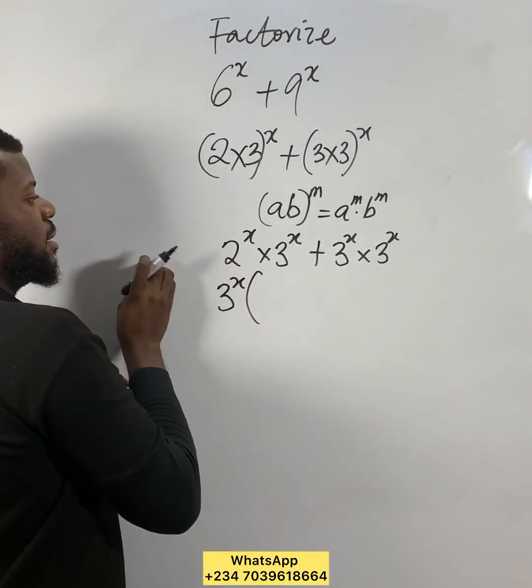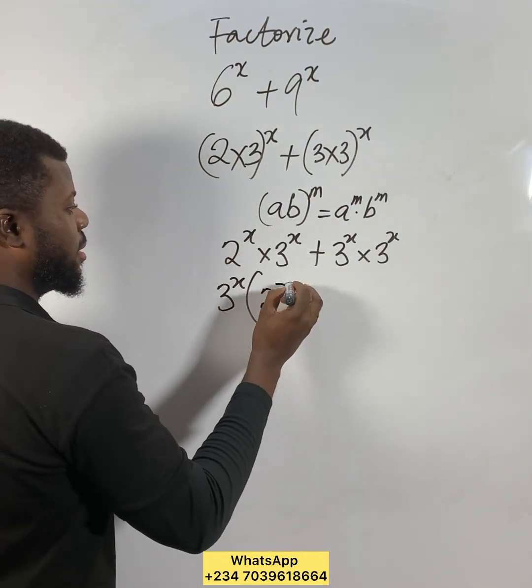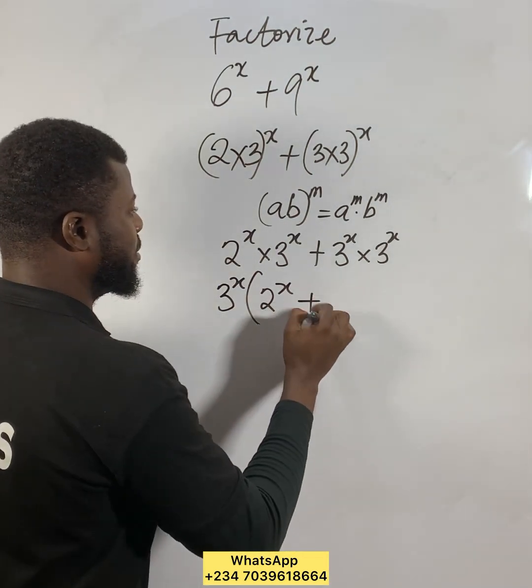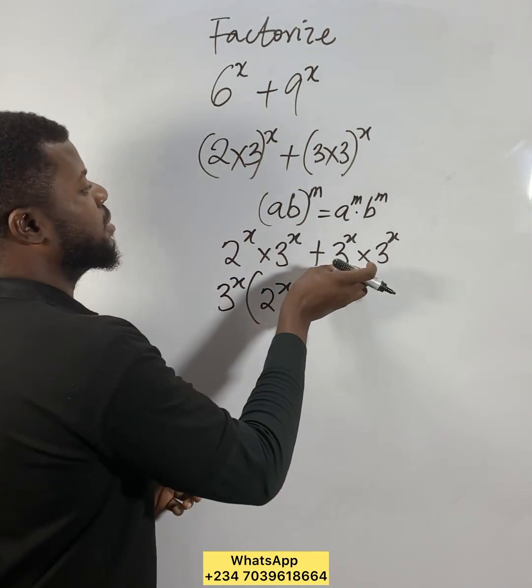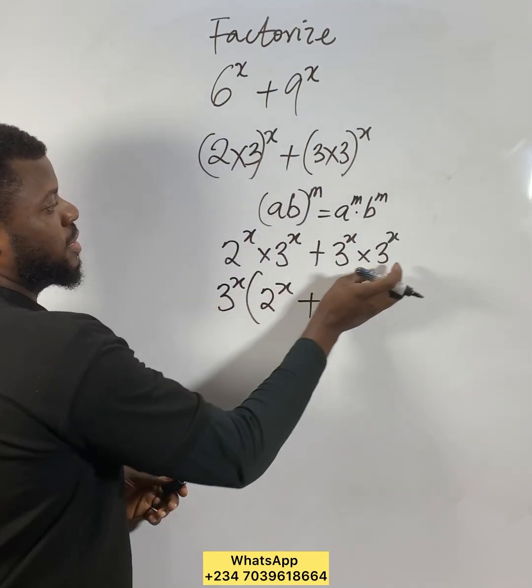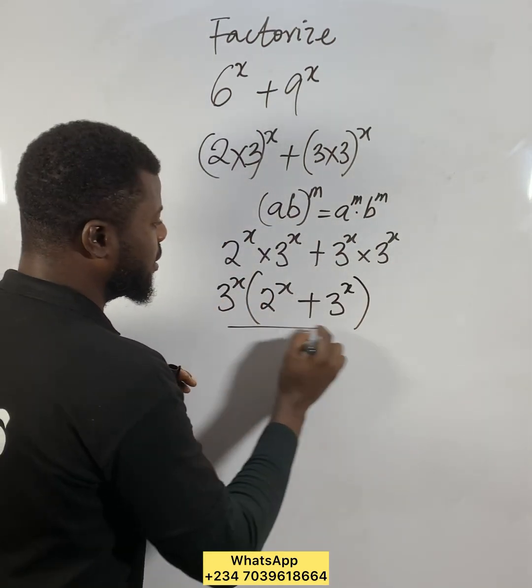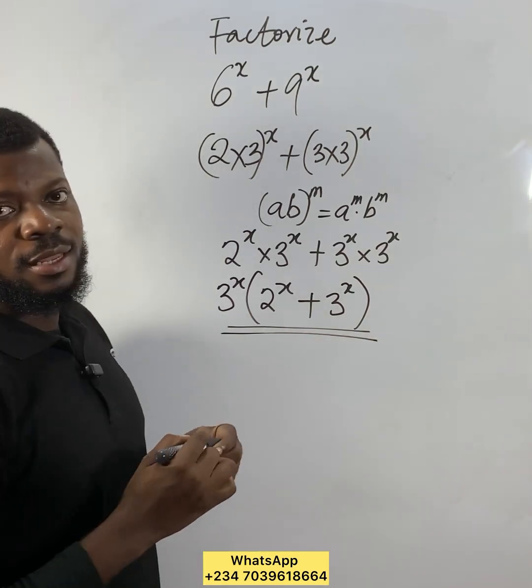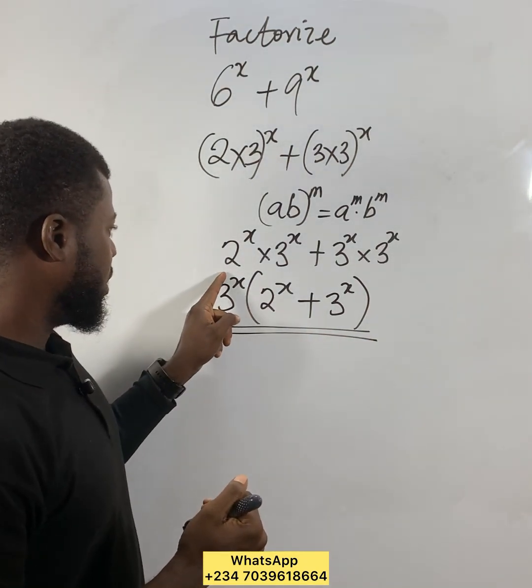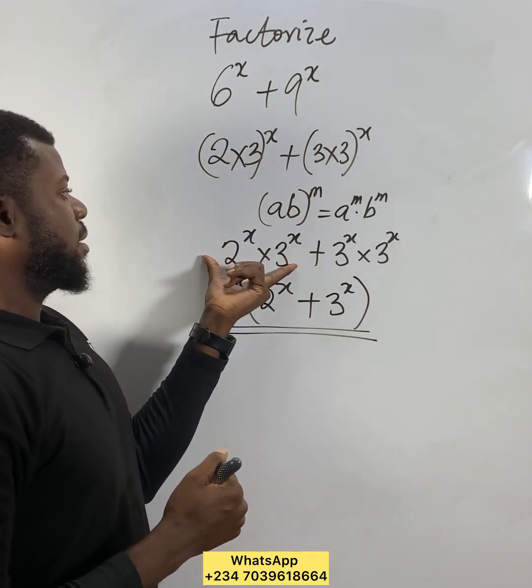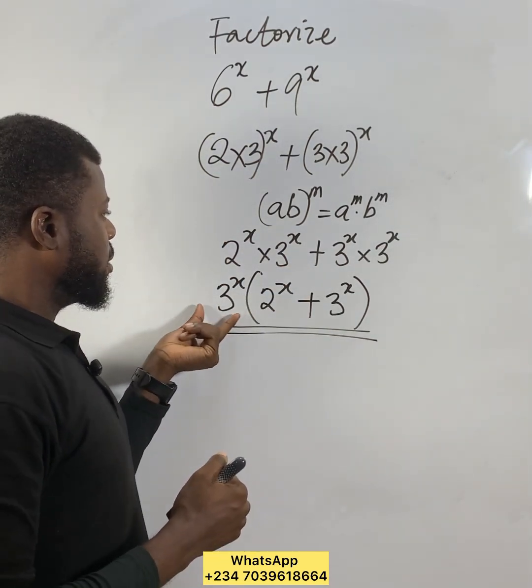So if you remove 3^x from here, what remains is 2^x. Plus, if you remove this 3^x from the second part, what remains is 3^x. So the answer is 3^x(2^x + 3^x).